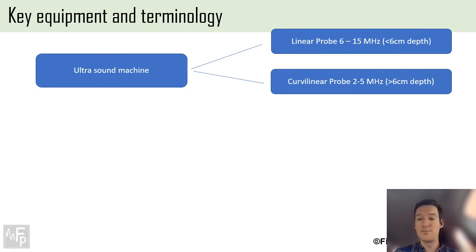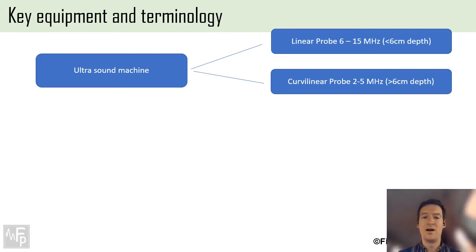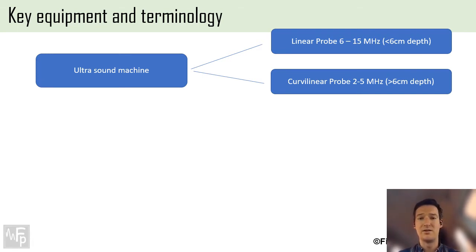Key equipment and terminology: you need an ultrasound machine with two probes. Ninety-five percent of the time it's going to be a linear probe - high frequency, high resolution, lower depth, usually 50 millimetres - sufficient for most blocks. The curvilinear probe has a lower frequency, much greater depth beyond six centimetres, but lower resolution. That's generally used for things like scanning backs, checking epidural space depth in patients with larger body habitus, or femoral nerve blocks in patients over 200 kilos. Generally speaking though, it will be a linear probe.